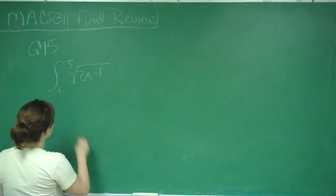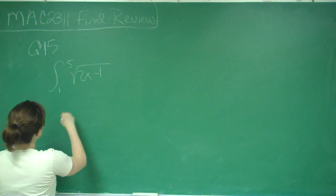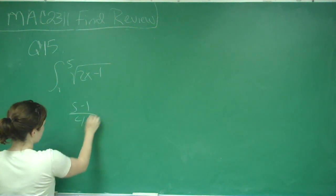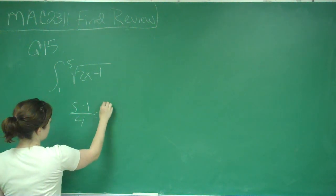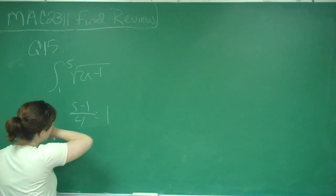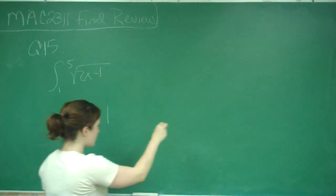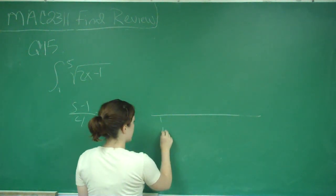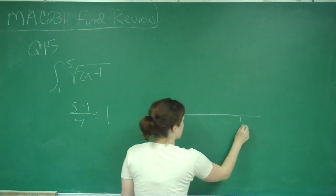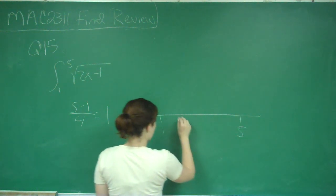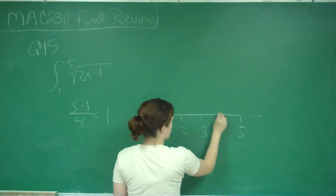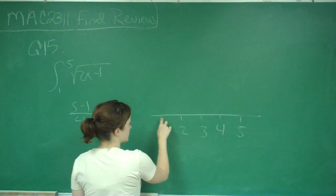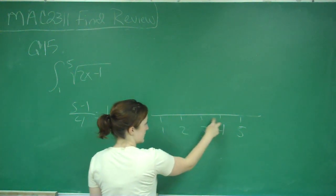So if we want four subintervals, we're going to have 5 minus 1 over 4, which is equal to 4 over 4, which is just 1. So I like to kind of draw it out here. If I'm starting at 1 and ending at 5: 2, 3, 4. So that gives me four rectangles.